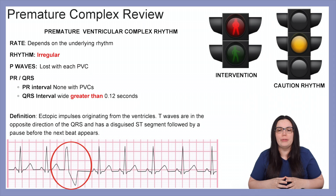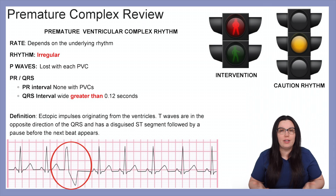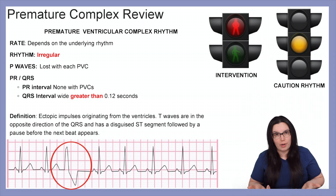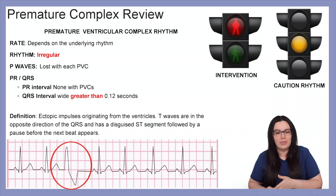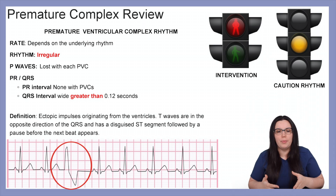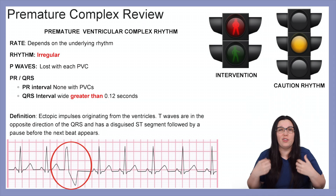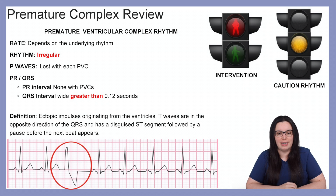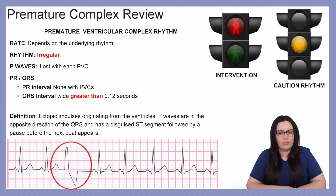Next we're going to take a look at premature ventricular complex rhythms — these are going to be a little bit more involved. The rate is really dependent on the underlying rhythm. The rhythm itself should be irregular, and P waves are going to be lost in each PVC, meaning the PR interval won't exist with these PVCs. The QRS interval is usually wide — they're ugly, they're big — just like with our ventricular rhythms, greater than 0.12 seconds. The definition is an ectopic impulse originating from the ventricles. T waves are in the opposite direction of the QRS, and there is a disguised ST segment followed by a pause before the next beat appears.